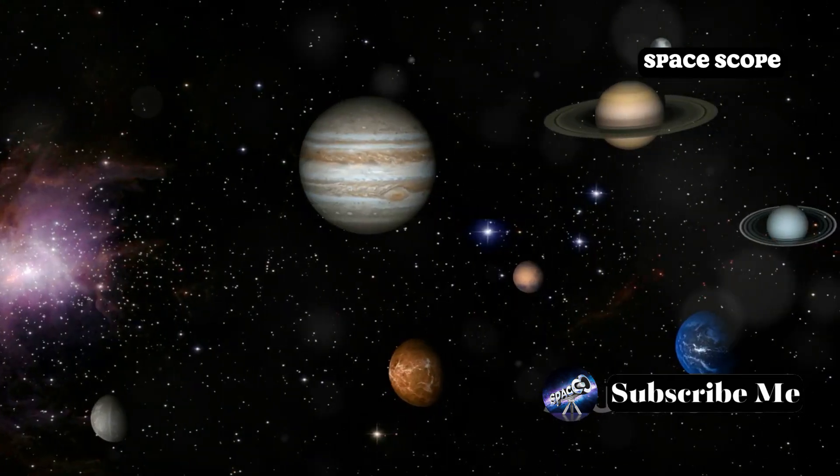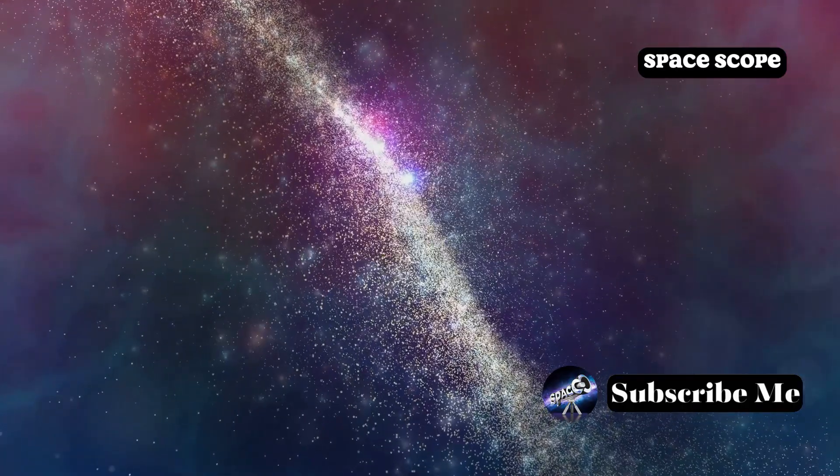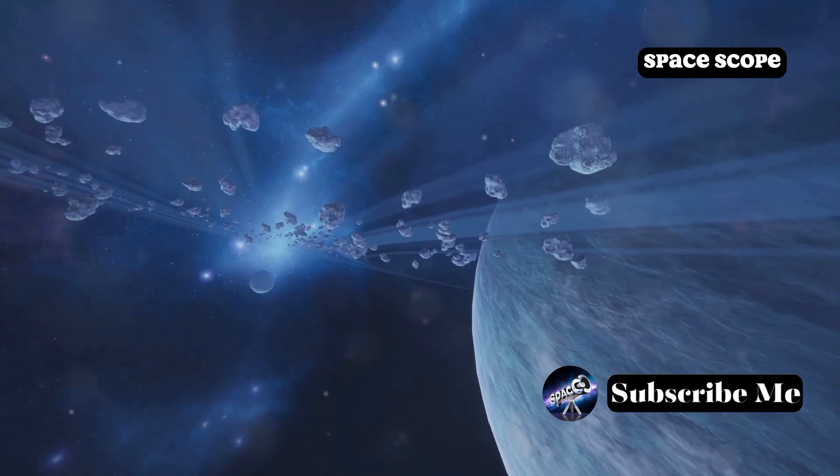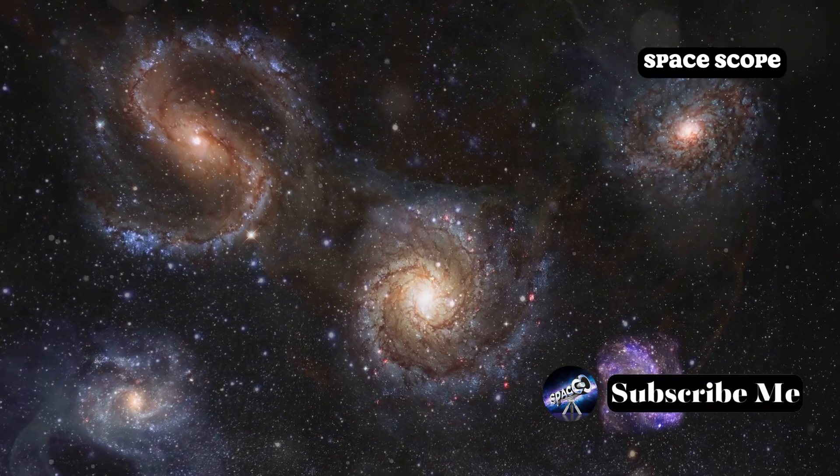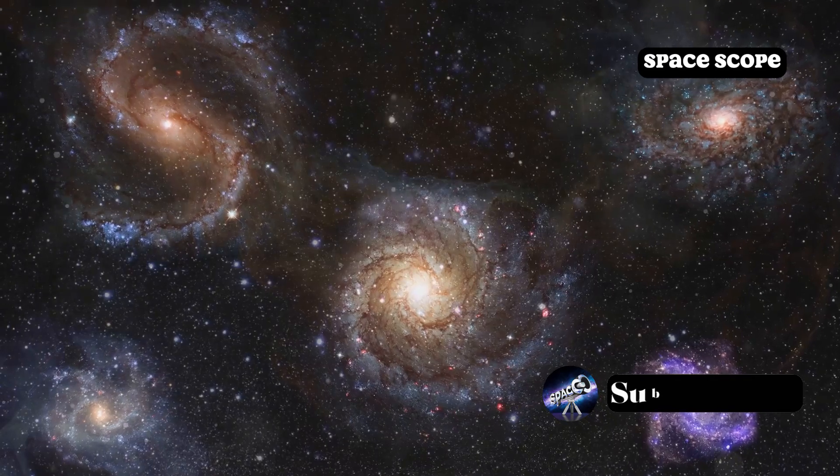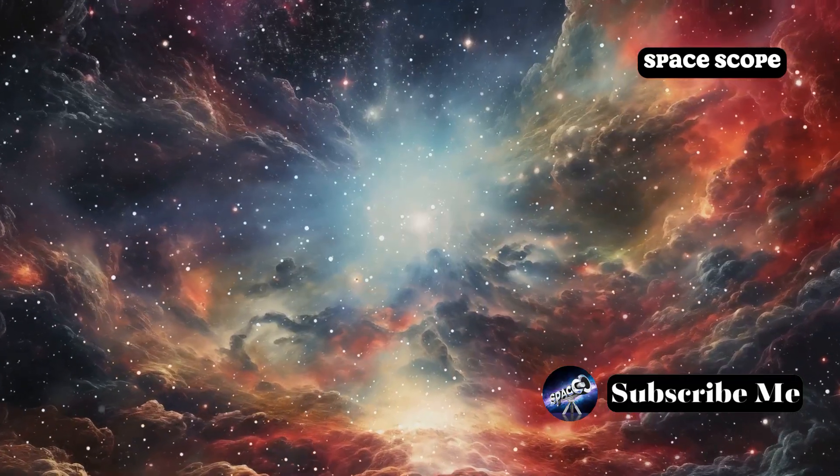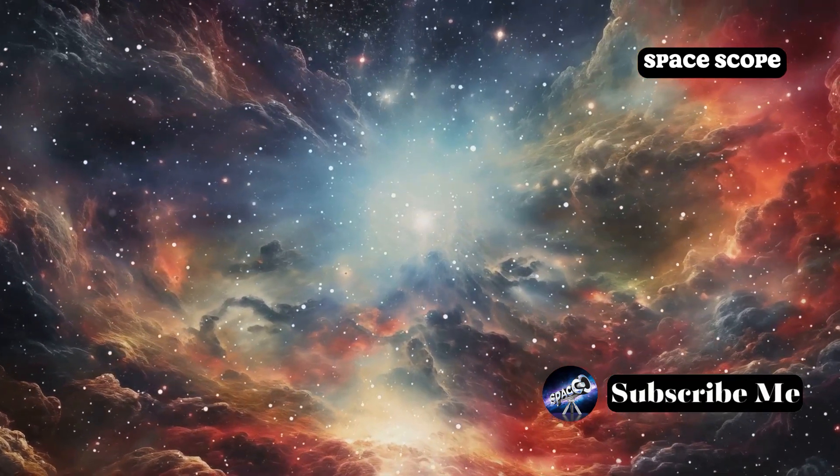Consider the intricate dance of celestial objects. Planets orbit stars, stars cluster into galaxies, and galaxies themselves move within vast cosmic structures. This cosmic ballet is not random, but governed by the underlying structure of space-time. If we could perceive these distortions, we would see the paths of planets not as simple ellipses, but as intricate spirals tracing the curves of space-time around their star. The graceful movements of galaxies would reveal the immense gravitational forces at play, shaping the large-scale structure of the universe.